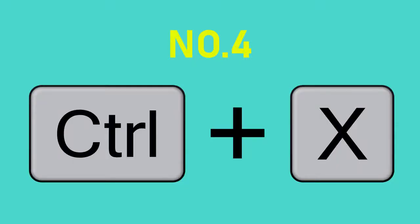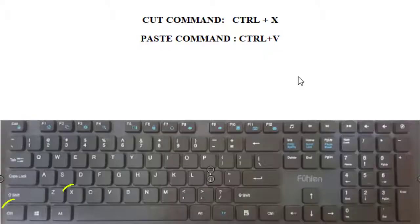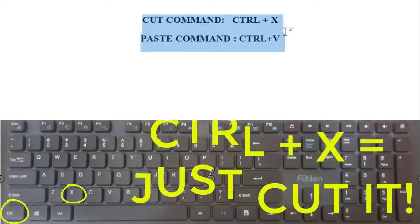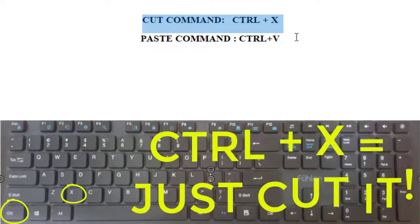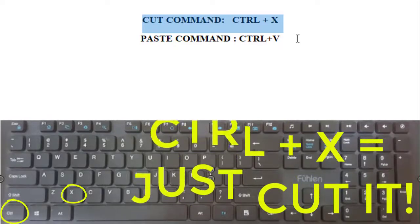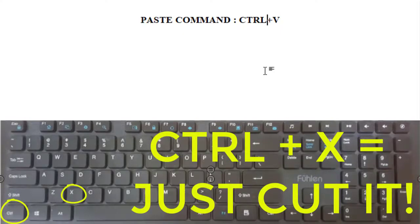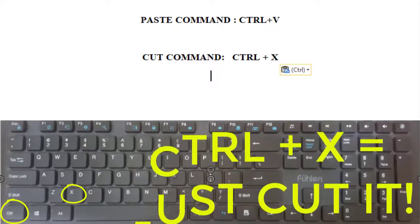Number 4: CTRL and X — Cut. Think of it as scissors or just cutting. The cut command is different from copy: you clone when you copy, but you cut when you want to fully move an item to another place without keeping the original. After cutting with CTRL and X, use the paste command from number 3.